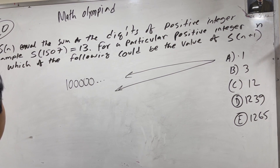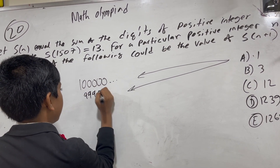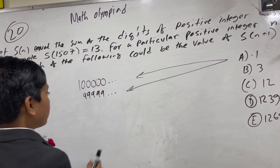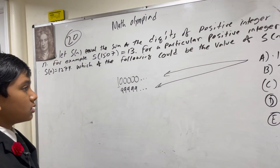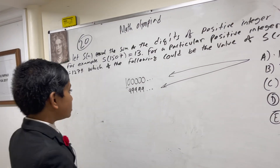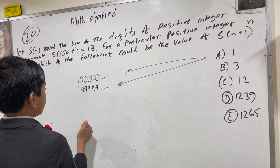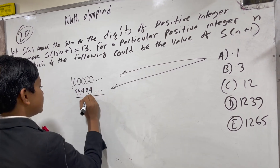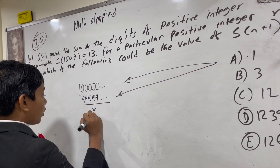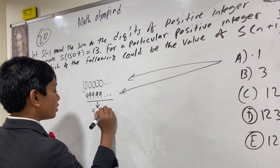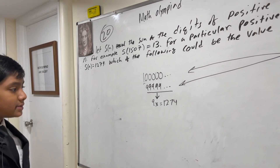That implies that n itself must be 999...9, as adding one more to that would turn it into this one. So we notice that the sum of these digits must equal 1274. We don't know how many nines there are, so let's say 9x = 1274.